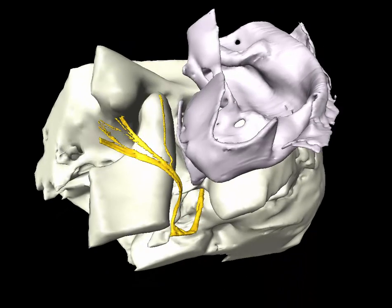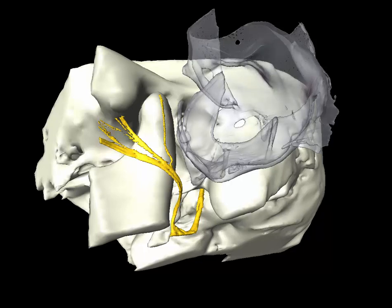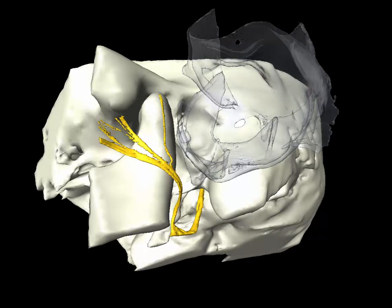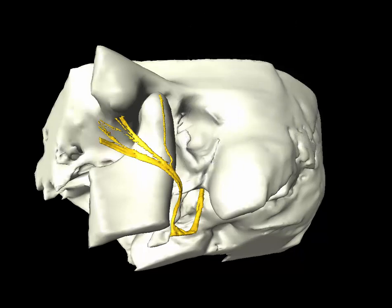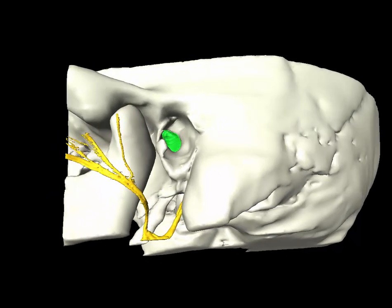It's easy to see how the tympanomastoid suture or the tragal pointer can be used as landmarks for finding the facial nerve in parotidectomy. The facial nerve descends a variable amount before encountering the pes. The tympanomastoid suture ascends from the stylomastoid foramen out toward the outer bony meatus and then descends into the outer meatus. The spine of Henle is visible, as is the tympanus squamous suture line in the roof of the external auditory canal.